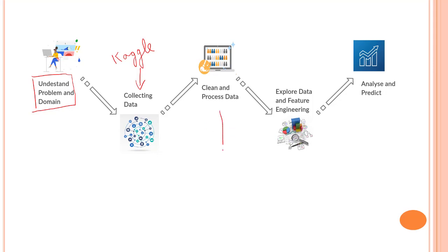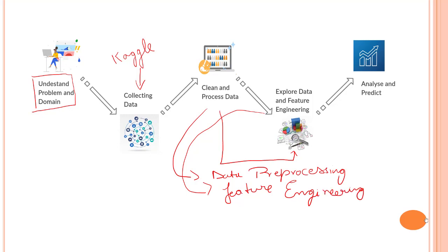So in the next two steps, these are known as feature engineering. Clean and process data - this is known as data preprocessing. And this step is known as feature engineering. Quite often when we refer to feature engineering, we account data processing in it. These are the two steps that we are going to look into in our next section - data preprocessing and feature engineering.